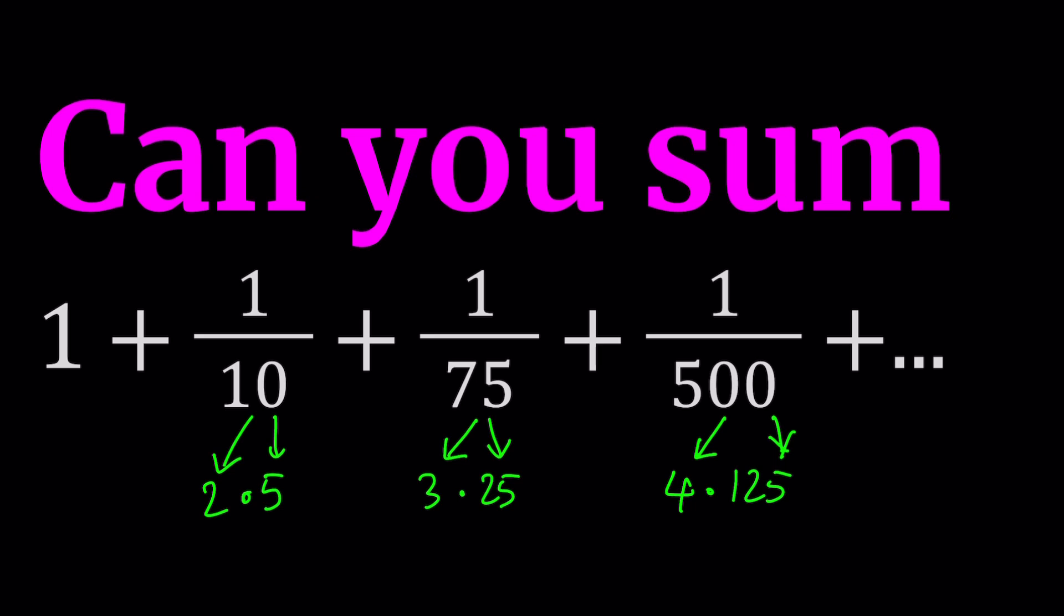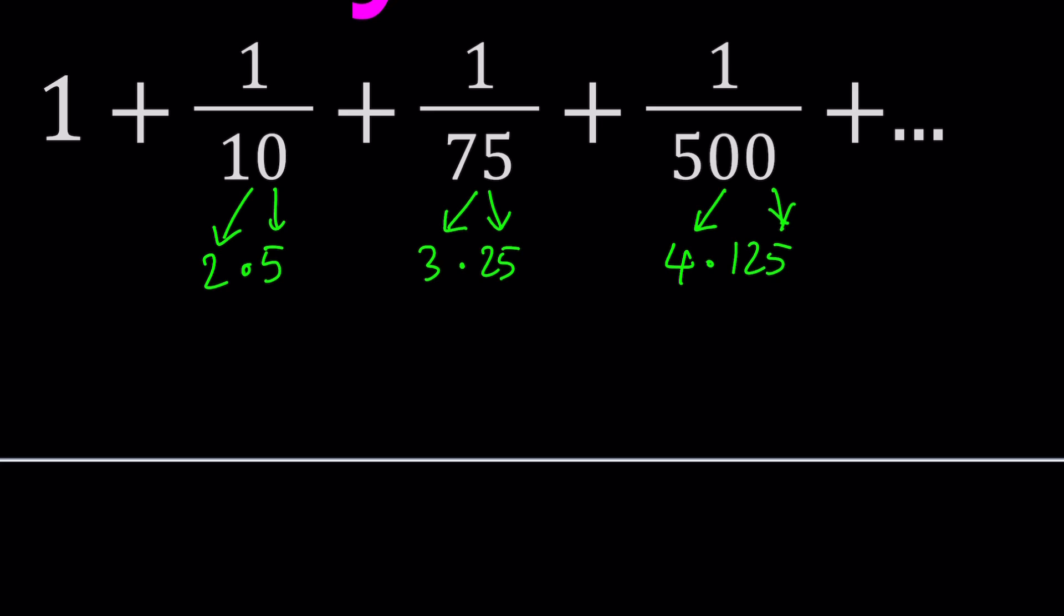But I didn't write it because that would be too many terms. Anyways, you get the idea. So what am I doing here? You have a two and five at the bottom, but we need to separate this into two pieces. One over two times five can be written as one over two divided by five. Make sense?